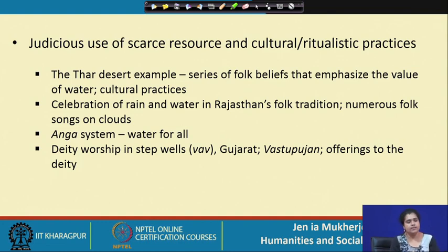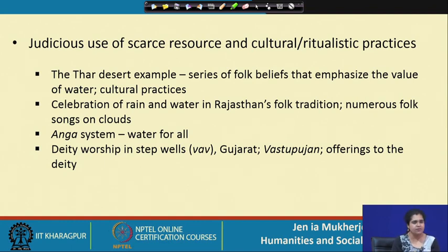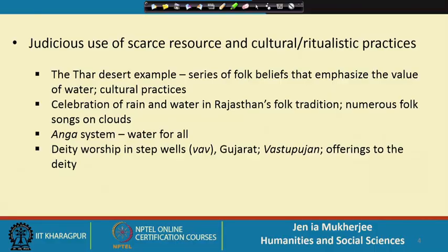Focusing on western India, Orissa was a delta where the main concern was tackling flood waters. In the arid and semi-arid regions the situation was quite the reverse — there was scarcity of resource. The question was how to pursue judicious use of scarce resource, and how different interesting cultural and ritual practices were embedded in order to propagate judicious use of scarcity.